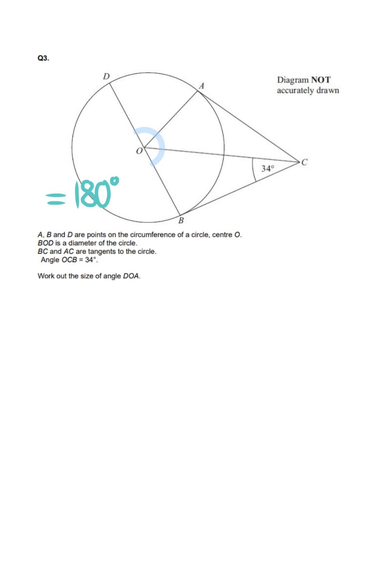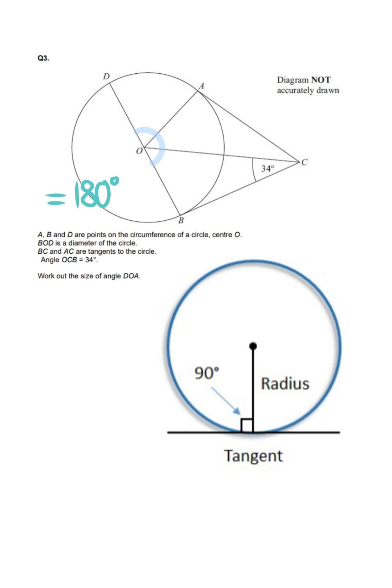Now here's the key. AC and BC are both tangents to the circle, and tangents meet the radius at 90 degrees, according to the circle theorem you see here.